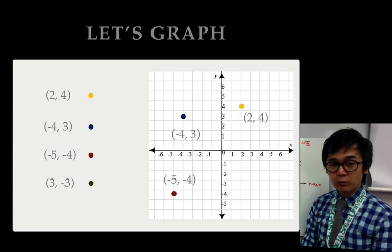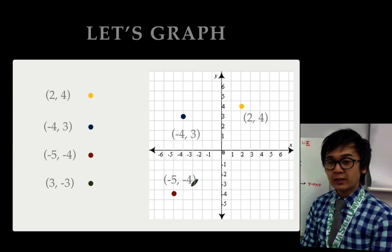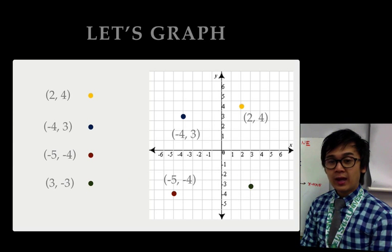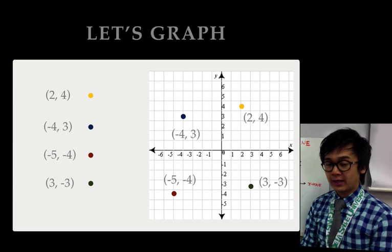And the last point that we have, which is (3,-3), we're going to plot it at x equal to positive 3 and y equal to negative 3, and this is our point for (3,-3).